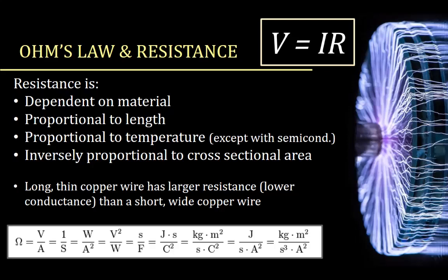The unit of resistance is an ohm — kilogram meter squared per seconds cubed per amps squared. Or in terms of coulombs: kilogram meter squared per second per coulombs squared. The typical unit we use is volts per amp, which is an ohm.